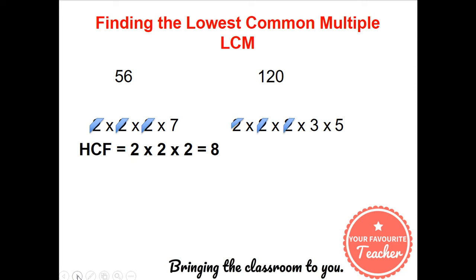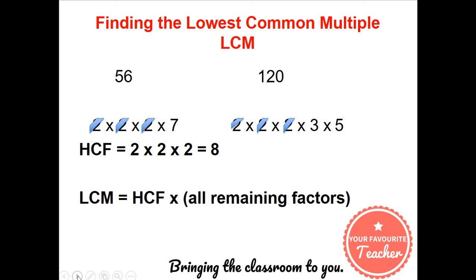Now that we have the highest common factor we can proceed to get the lowest common multiple. The lowest common multiple is the highest common factor times all remaining factors. So LCM is equal to 8 times 7 times 3 times 5 which in this case is equal to 840.